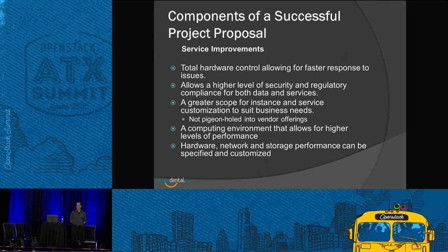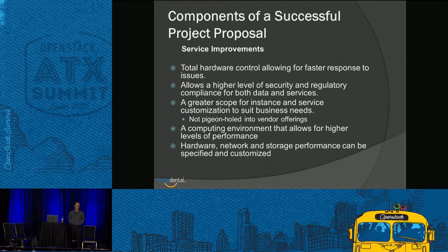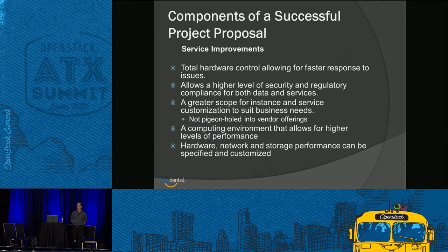You want to hit on all the service improvements. Total hardware control gives you faster response to resolve issues. Higher level security — you have way more control. If you need to comply with regulatory laws, it's much easier. You can have a greater scope of instance and service customization — you're not stuck with whatever CPU and memory resources your cloud provider offers. You can design your computing environment for any level of performance, use different hardware for different parts of the infrastructure, and specify and customize your hardware network performance.